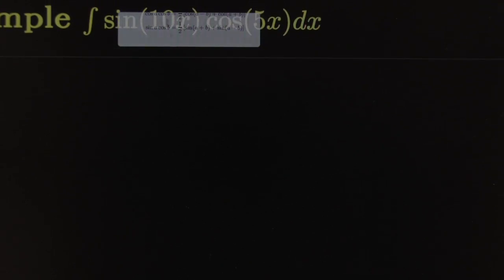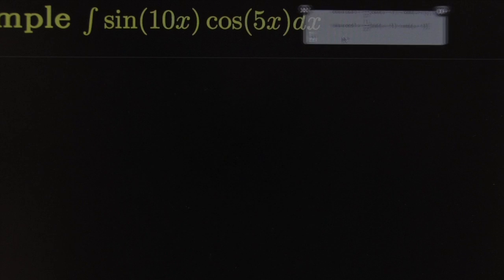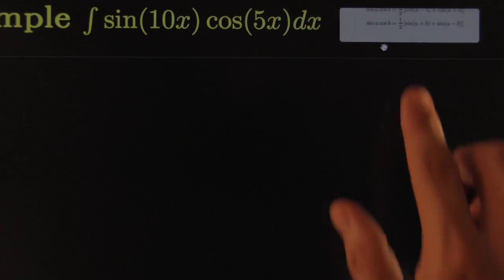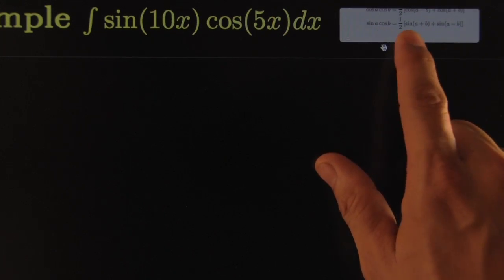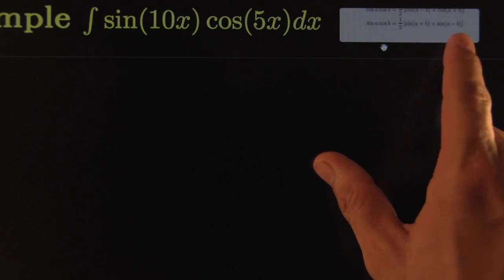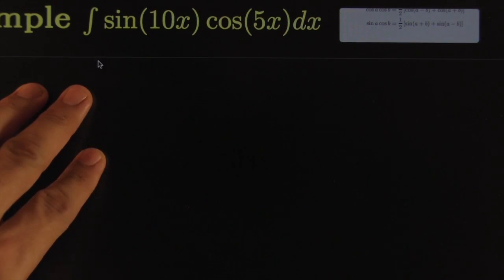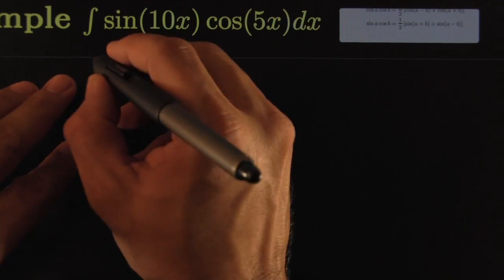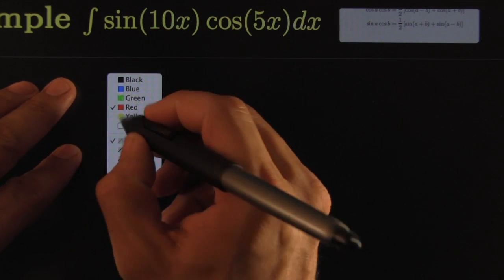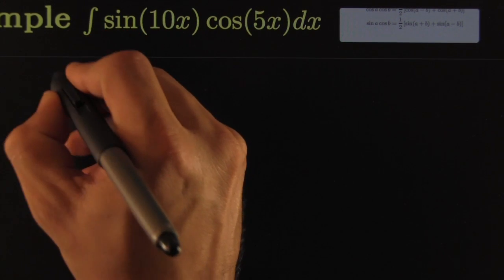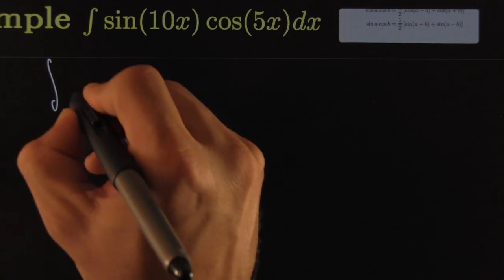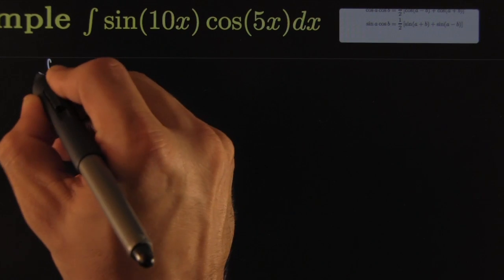That's the identity we're going to use. It reads: sin(a)cos(b) equals one-half sin of the sum plus sin of the difference. So this guy would become the integral of one-half - I'll put the one-half out here.